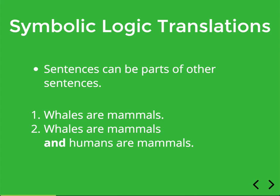First we have to learn how to translate sentences from English into symbolic logic. Sentences can actually be parts of other sentences. For example, sentence one is 'whales are mammals,' and sentence two is 'whales are mammals and humans are mammals.' Sentence one actually appears inside sentence two — sentence two contains sentence one as a part. You can think of sentence two as basically two sentences joined by 'and,' which is combining those two parts.